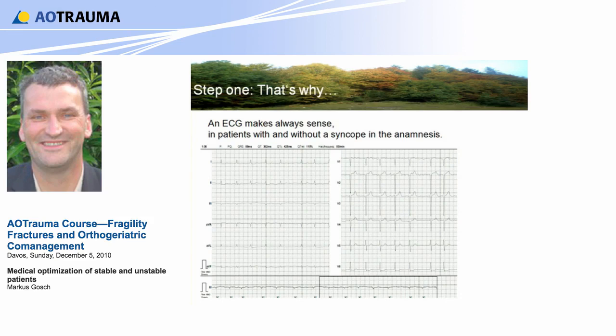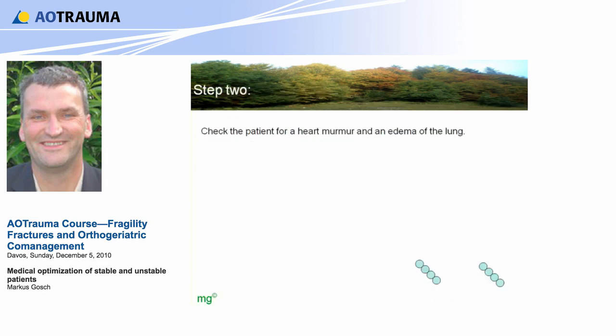On this slide you see atrial fibrillation — it's not a great problem. It's normal frequency between 60 and 100, so it's no reason for a delay of the operation. In many departments the computer analyzes the ECG and shows normal or abnormal, which is also important information. Step two: check the patient for a heart murmur and an edema of the lung. This is very simple, but many of you, I think, will not do it.